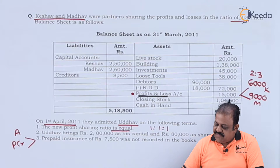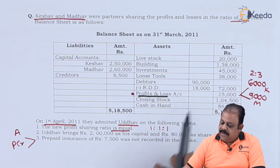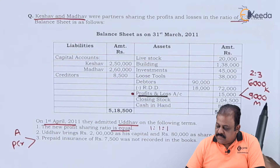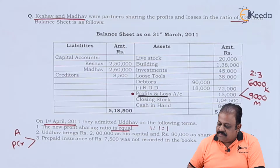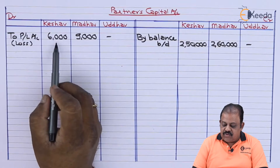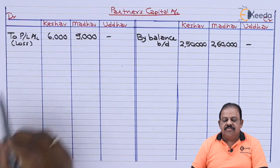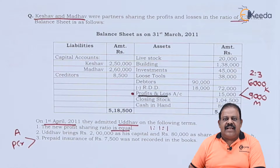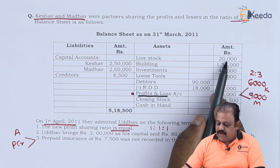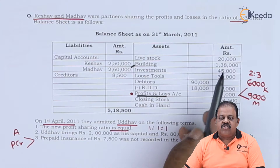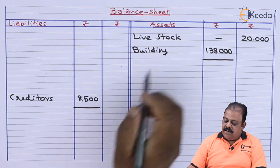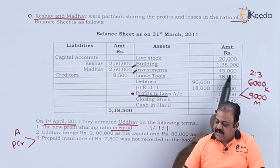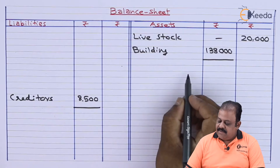The profit and loss account is 15,000. This will be distributed among partners in the ratio of 2:3, that is 6,000 and 9,000 — debit partners' capital accounts accordingly. Livestock has no adjustment and will be recorded in the new balance sheet as is. Building has an adjustment: new balance sheet asset side shows building at 1 lakh 38,000. Investments also have an adjustment.